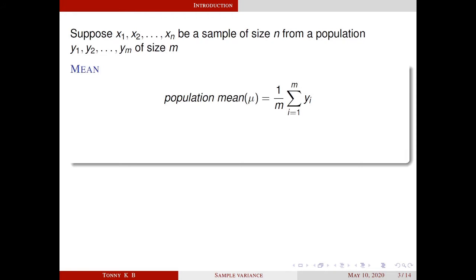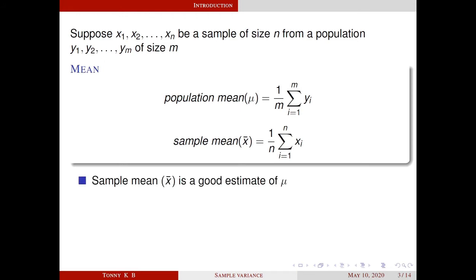Then what is the analogous definition of sample mean? It is sample mean x bar equals 1 by n, sigma i equals 1 to n, xi. Is it a good estimate of mu? Fortunately, yes. Sample mean x bar is a good estimate of mu.